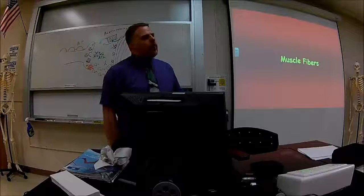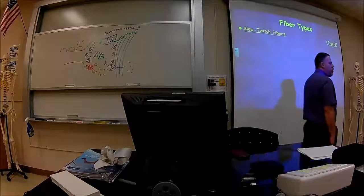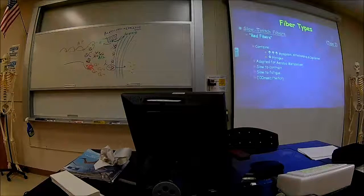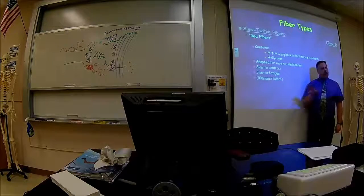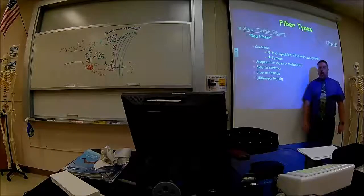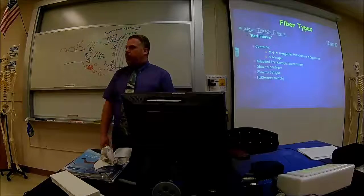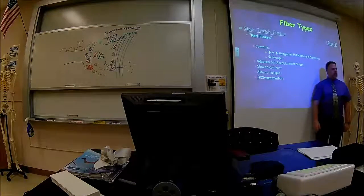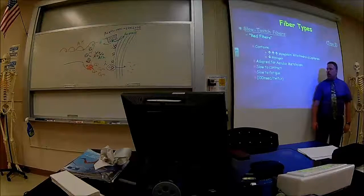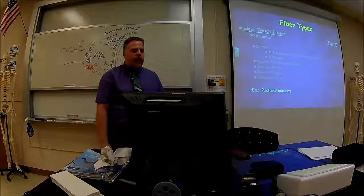There are two different types of muscle fibers. Slow twitch fibers are called Type 1, or red fibers. They contain a large amount of myoglobin, which gives them their red-brownish color. Myoglobin holds a lot of oxygen, so there is not much glycogen stored, but lots of oxygen. These muscles are adapted for aerobic metabolism and are slow to contract.